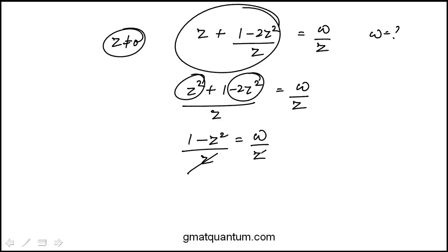z is not equal to 0, so it cancels out. We're left with w is 1 minus z squared, which they've written as minus z squared plus 1 in answer choice c.